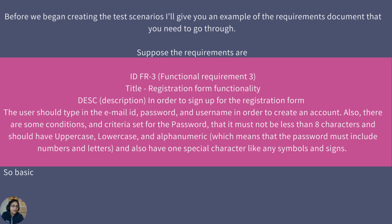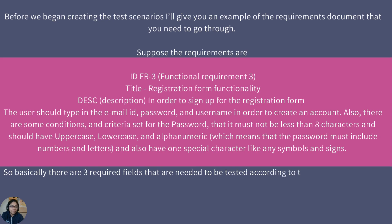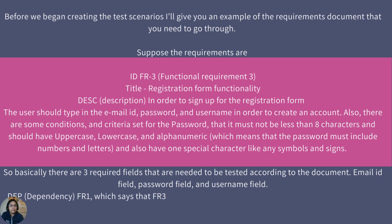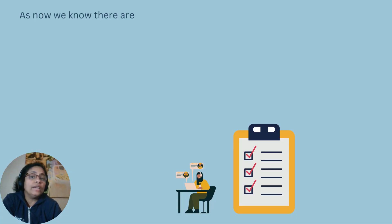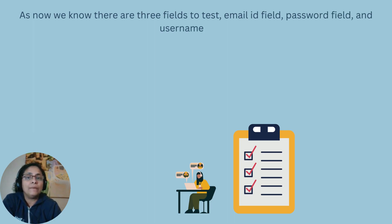Basically, there are three required fields that need to be tested according to the document: the email ID field, the password field, and the username field. DEP — dependency FR1 — which says that FR3 depends on FR1. This is important because it specifies the order of execution of scenarios. So now we know there are three fields to test: email ID field, password field, and username field.